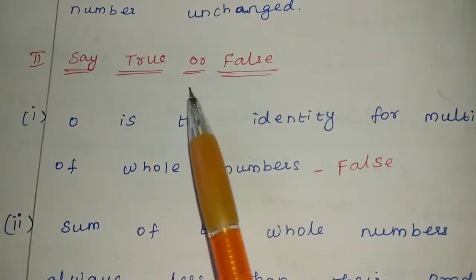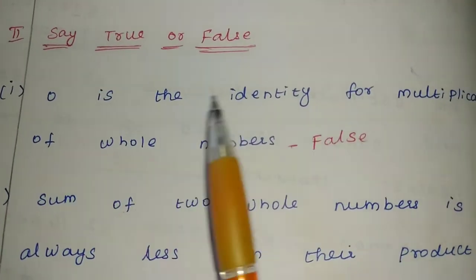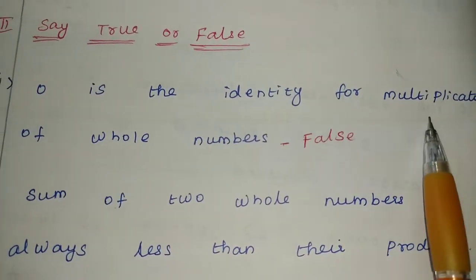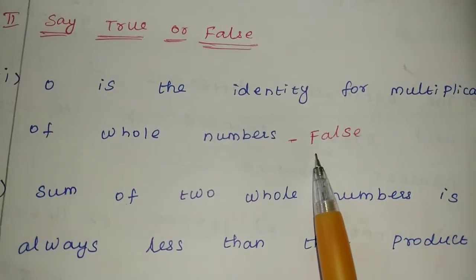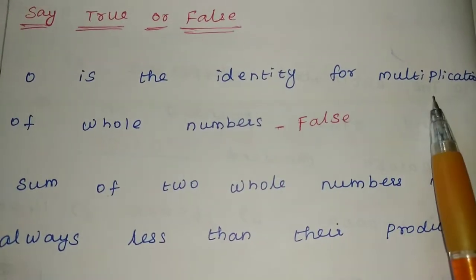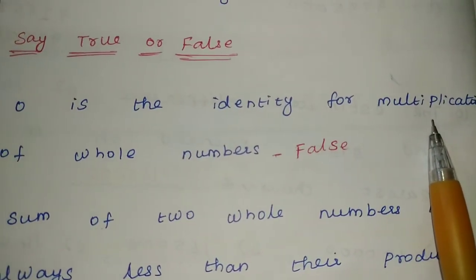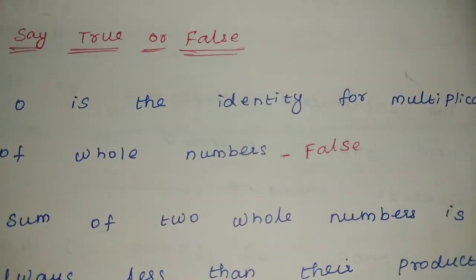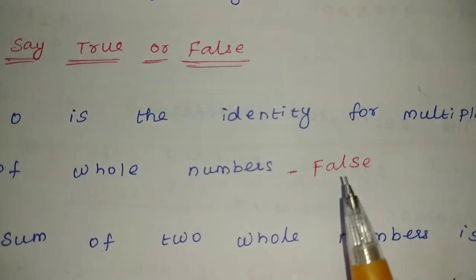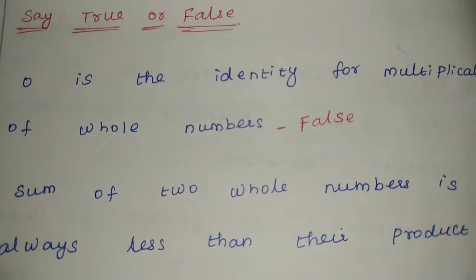Next, say true or false. 0 is the identity for multiplication of whole numbers. 0 is not the identity for multiplication. It is for what? Additive identity is 0, for multiplication it's 1. The answer is false. Statement wrong.